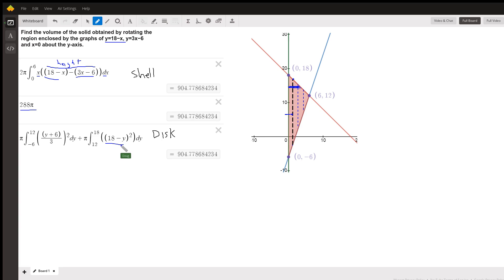The disk method is pi times the definite integral from a to b of outer radius squared minus inner radius squared. But in our case, the inner radius, there is no inner radius. So we're not using the washer method. We're using the disk method.